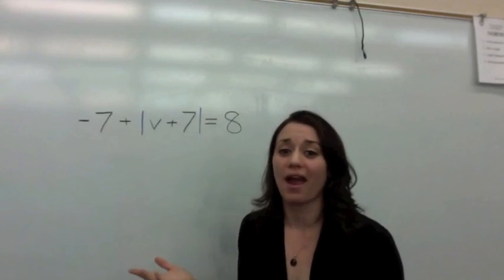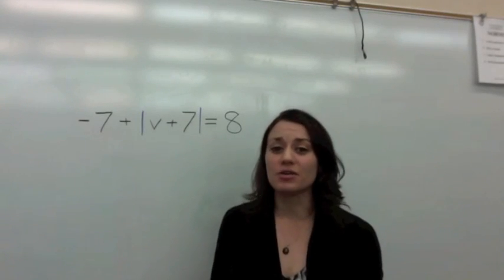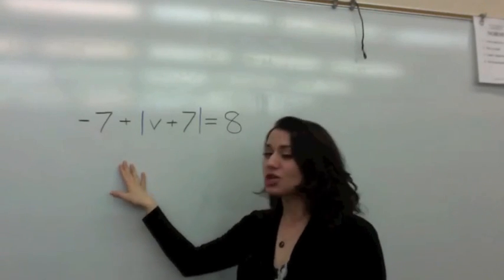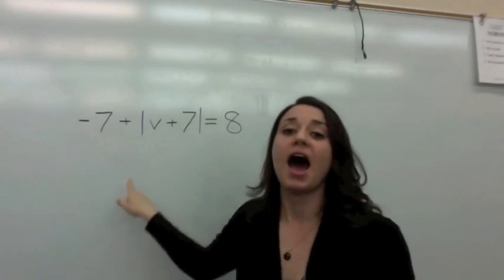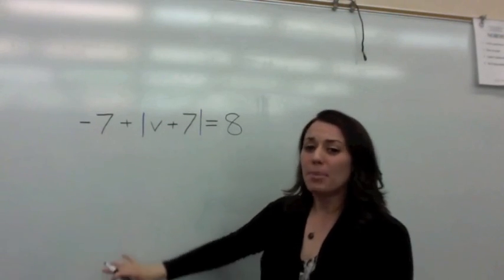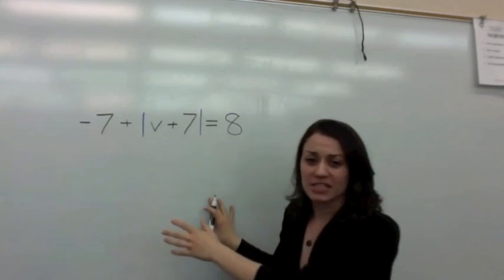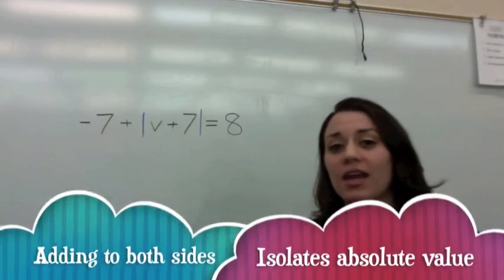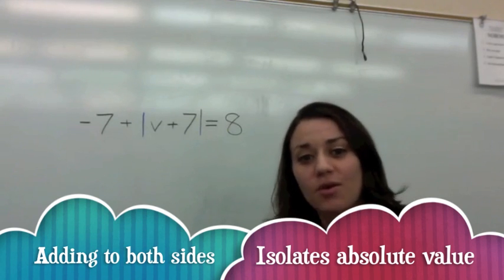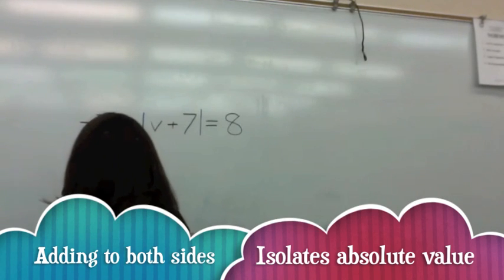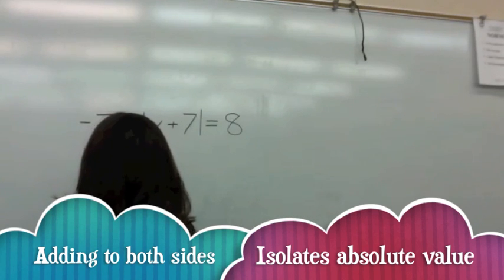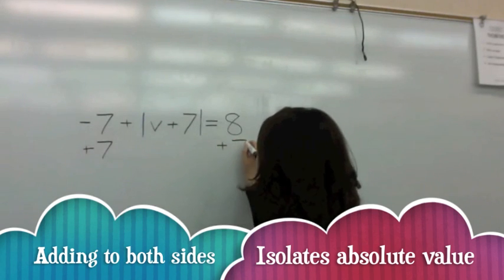But then out of nowhere Miss Absolute Value says to Mr. Seven, you know what Mr. Seven? You are too negative for me. I need to be with somebody positive. Mr. Seven goes, but baby, but baby I could be positive. Just watch. If you add seven to both sides look at what happens to the equation. The opposite of negative seven is positive seven. So you have to do that to both sides of the equation. Is that right?